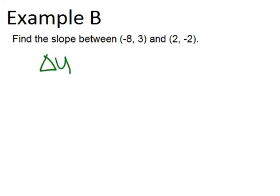So we need to figure out our delta y and our delta x. Delta y is always the difference in the y coordinates. So to figure that out, we can just do 3 minus negative 2.